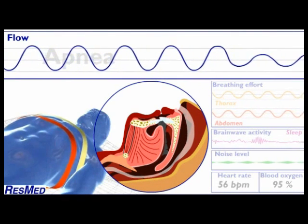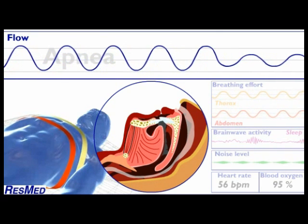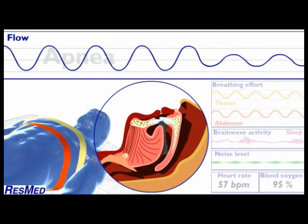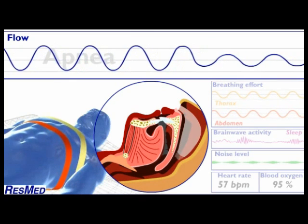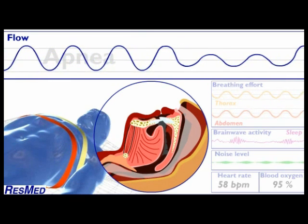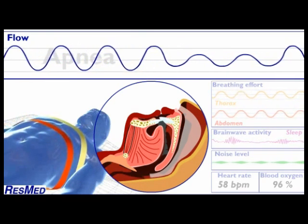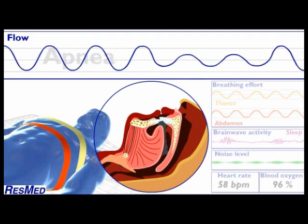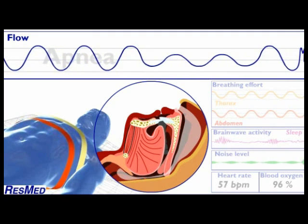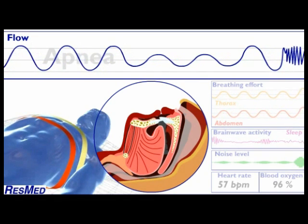Apnea — what is really happening? When the airflow drops to below 50 percent of normal, this is known as a hypopnea. If you have SDB, the amount of flow limitation you experience, with or without snoring, varies continuously during the night.